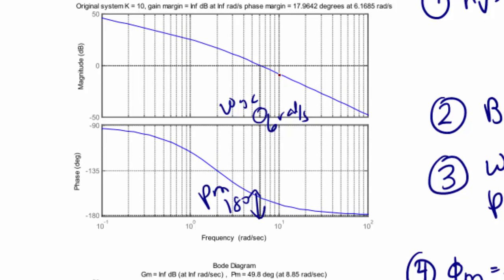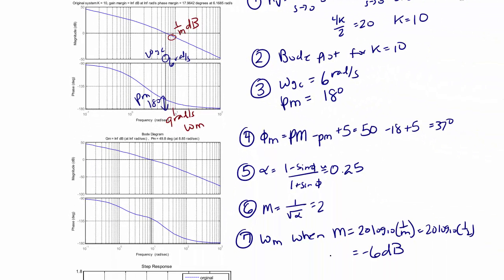When we look at our plot, negative 6 decibels is approximately here. That's 1 over m in decibels, and that occurs at about 9 radians per second, which is going to be omega m. Omega m is equal to 9 radians per second.